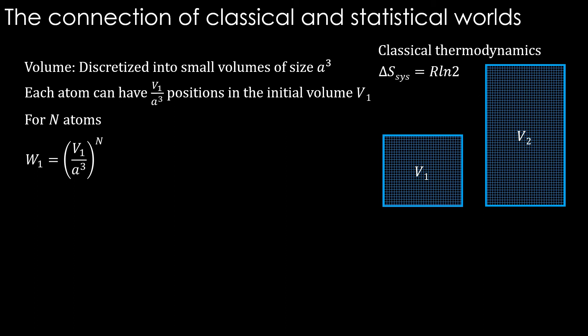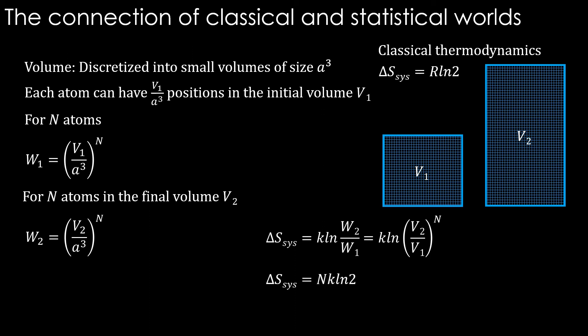Similarly for the final state, we can calculate W2 to be this. When we want to find out the entropy change between final and initial state, we get delta S equals K natural log of W2 divided by W1 which is equal to K natural log of V2 divided by V1 power N. That is equal to N K natural log of 2.